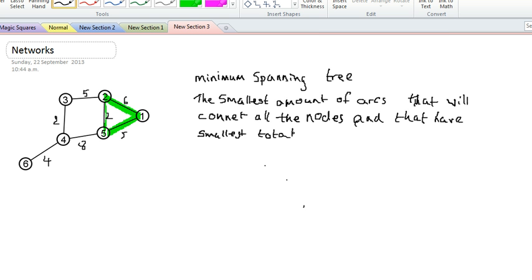Now, to be honest, doing this particular network diagram is going to be quite trivial. Because if I look at that, I want the minimum spanning tree. I look at my triangle of 1, 2, 5, and the biggest number is 6, so I'm going to cross that out.